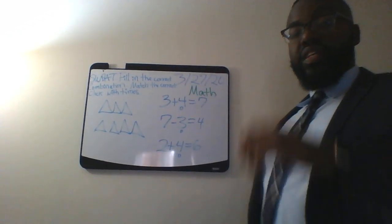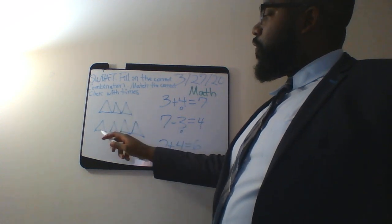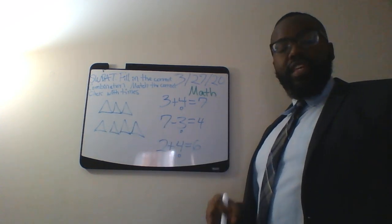Now, let's look at number 2. Number 2 wants us to fill in a bubble under the combination that tells us how many there are all together. So let's count how many that we have. We have 1, 2, 3, 4, 5, 6, 7. We have 7 all together.